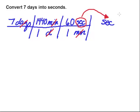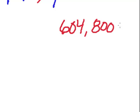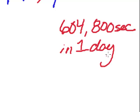So I'm going to get my calculator out and put in 7 times 1440 times 60, and I find that there are 604,800 seconds in 7 days. A lot of seconds.